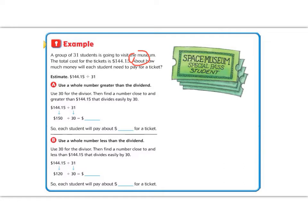So A says use a whole number greater than the dividend. It says use 30 for the divisor. And then find a number close to 144 that divides by 30. So if we follow those steps, we're going to divide by 31. So we round 31 to 30, because that's a nice easy number. Then I think of multiples of 3: 3, 6, 9, 12, 15. 15, 150 is close to 144.